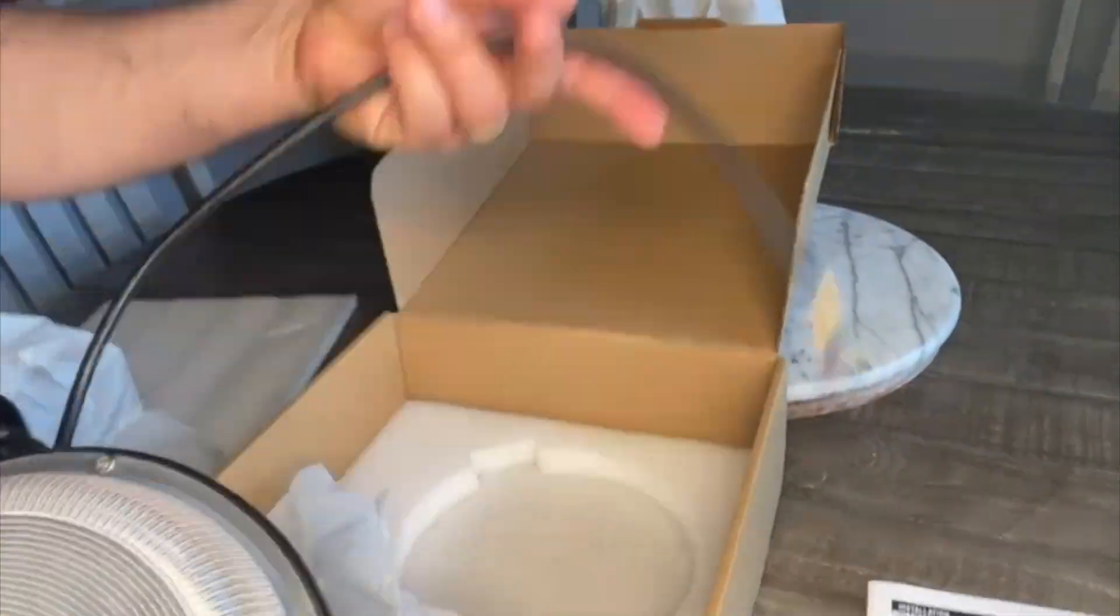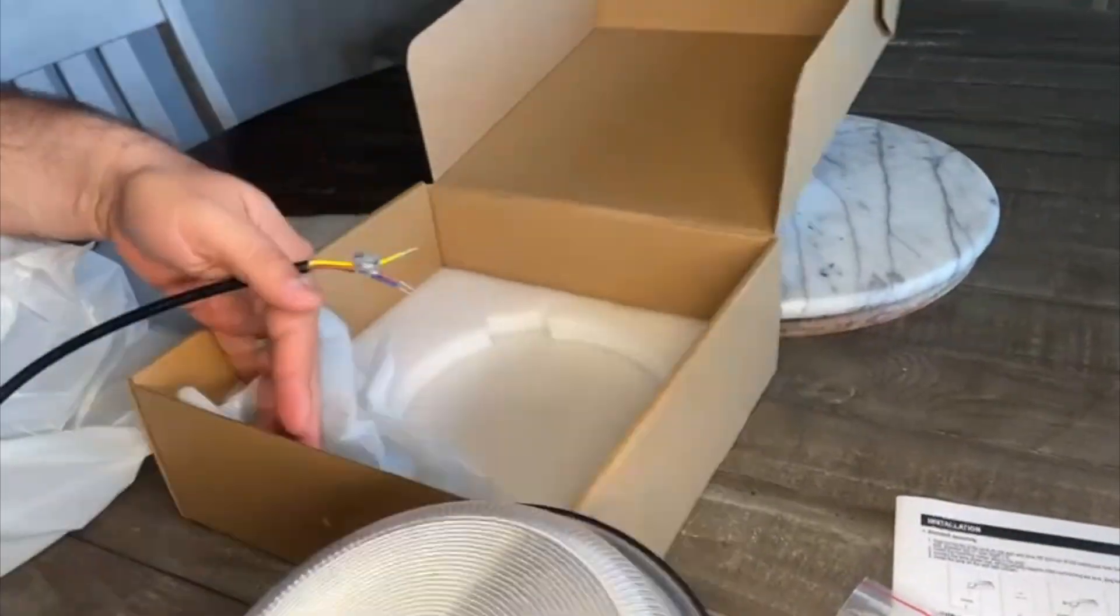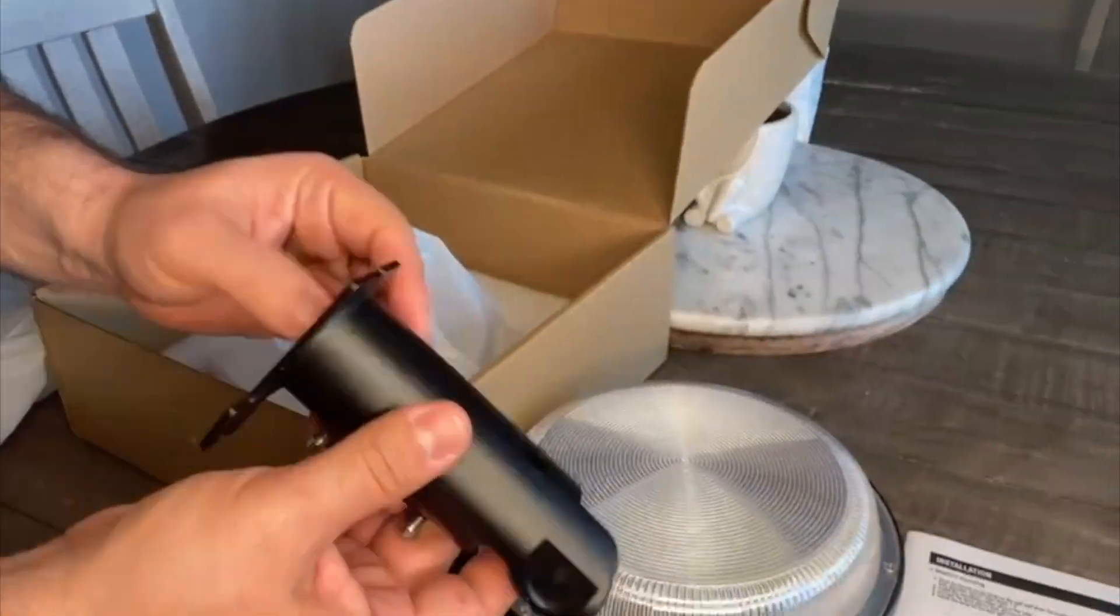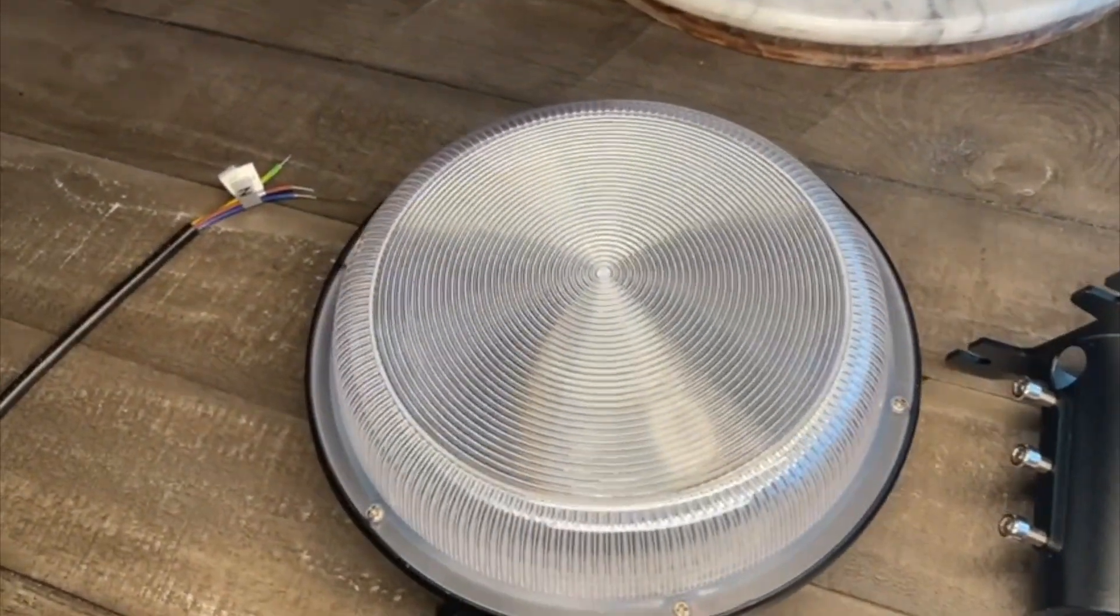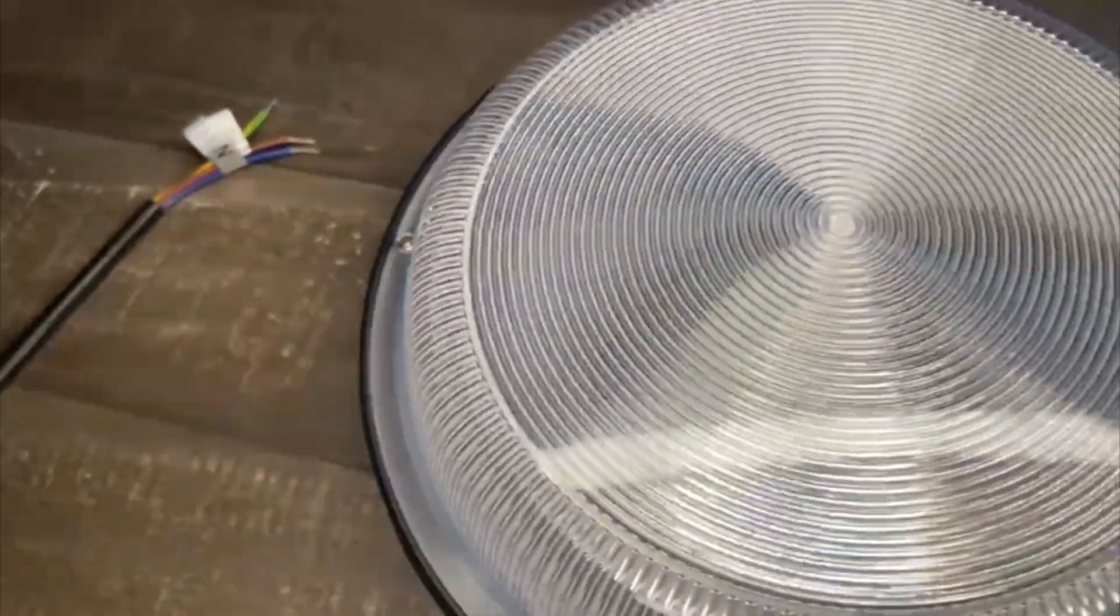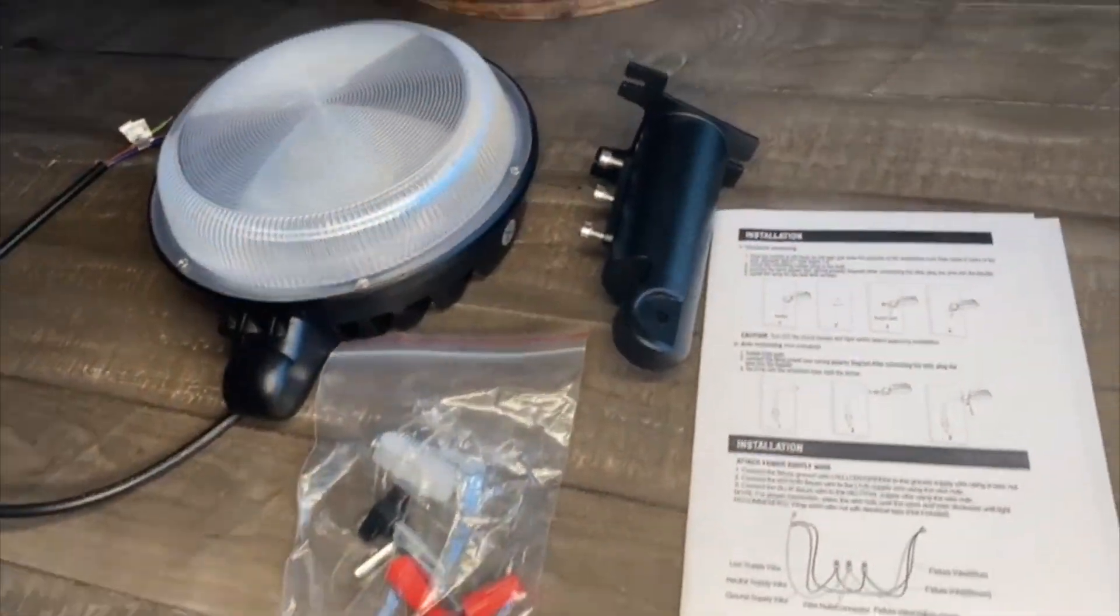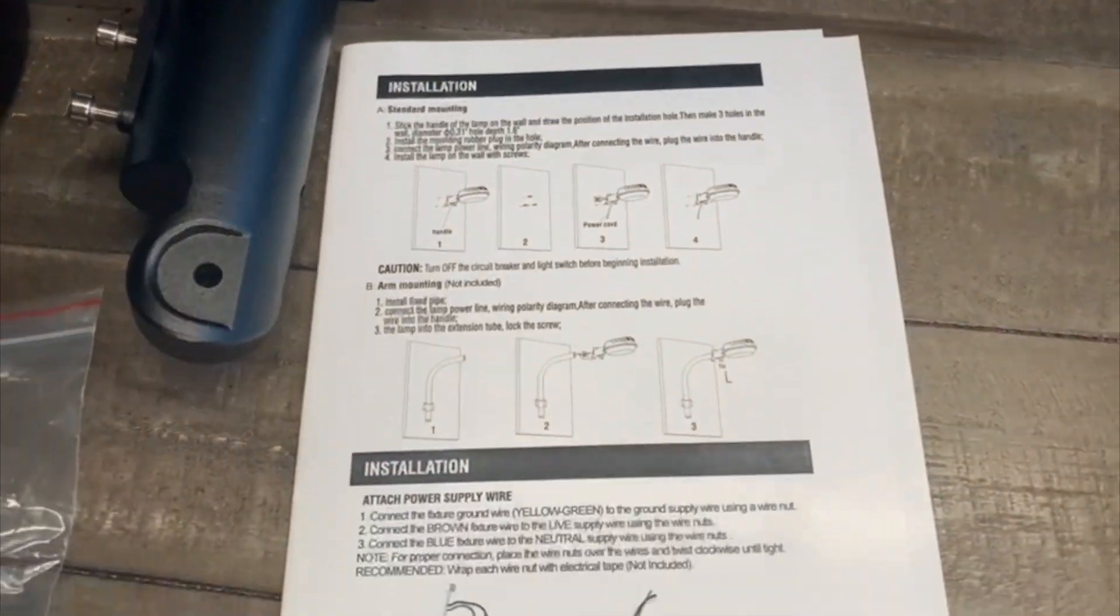It includes all the tools that you need in the box and the lamp with the cables, of course, and this pole so you can install it as well. It also includes the manual of instructions, and I'm going to show you how we install it in this place.